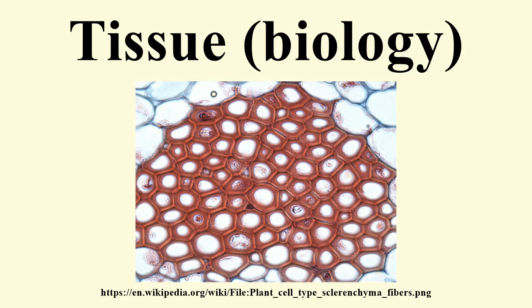The cells of meristematic tissues are similar in structure and have thin and elastic primary cell walls made up of cellulose. They are compactly arranged without intercellular spaces between them. Each cell contains a dense cytoplasm and a prominent nucleus. Dense protoplasm of meristematic cells contains very few vacuoles. Normally the meristematic cells are oval, polygonal, or rectangular in shape, with a large nucleus and small or no vacuoles.